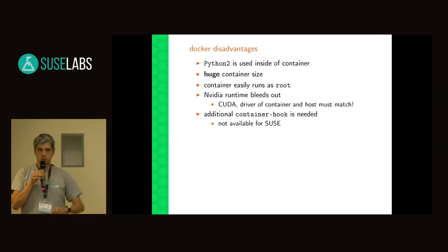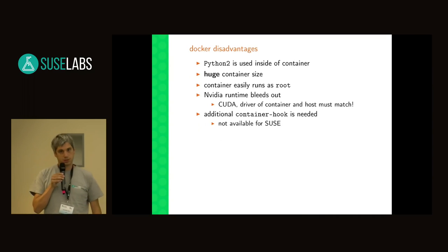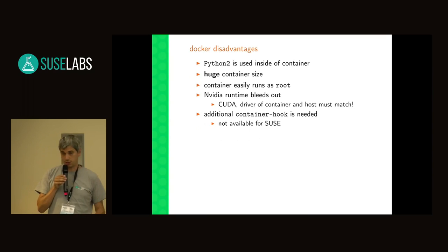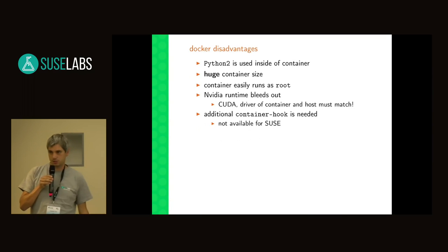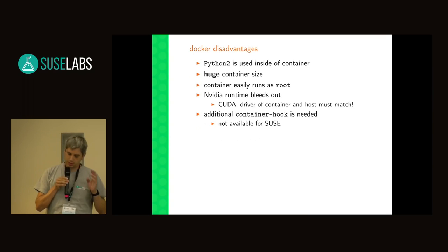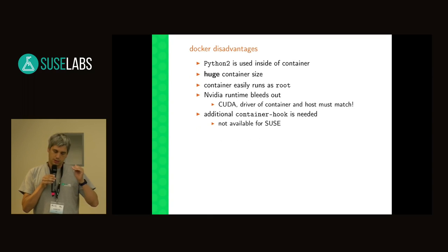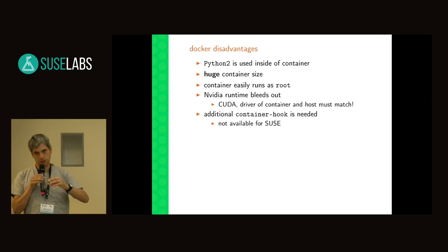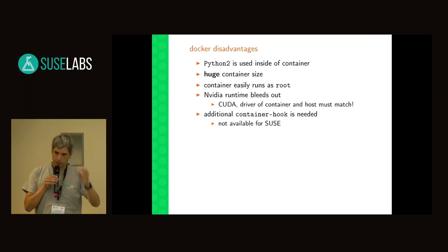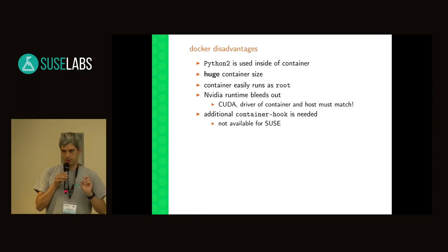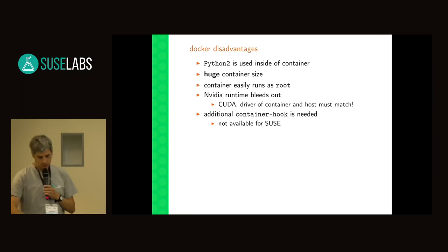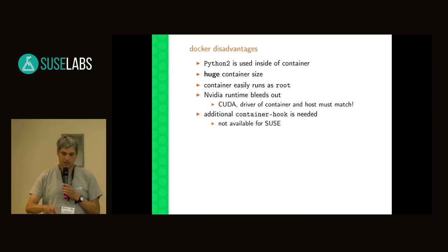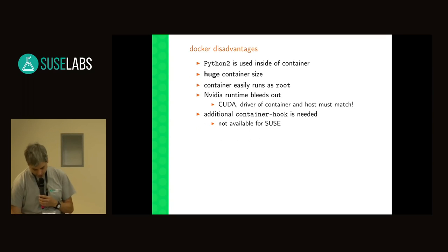There are Docker disadvantages. For example, if you spin up the Docker container, you suddenly find out that the whole machine learning app is still Python 2, which is kind of awkward. The container sizes are really huge for these machine learning containers — around gigabytes. Also, you can easily run the data as root, which is not nice. And then you still have the problem that the NVIDIA driver and the CUDA library bleeds out of the container into the operating system, so you need to be coherent — the driver must match the container version. Additionally, for GPU support for NVIDIA, you needed an additional container which was not available for SUSE when I did this, though this should change.